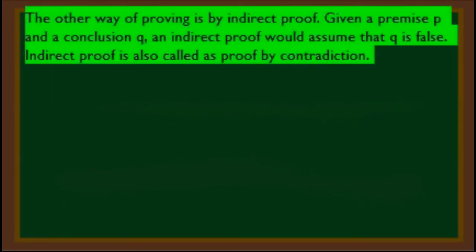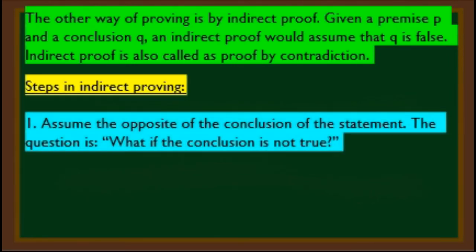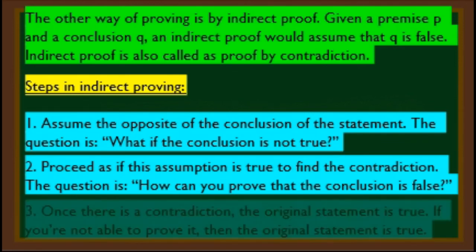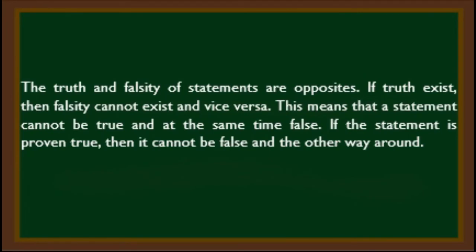The other way of proving is indirect proof. Given a premise P and conclusion Q, an indirect proof assumes that Q is false — also called proof by contradiction. Steps: first, assume the opposite of the conclusion. Second, proceed as if this assumption is true to find a contradiction. Third, once there is a contradiction, the original statement is proven true. The truth and falsity of statements are opposites — a statement cannot be both true and false at the same time.